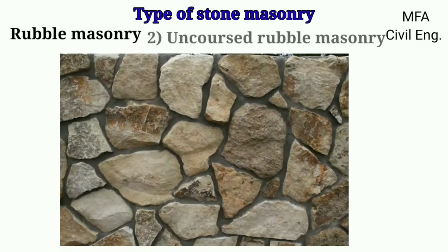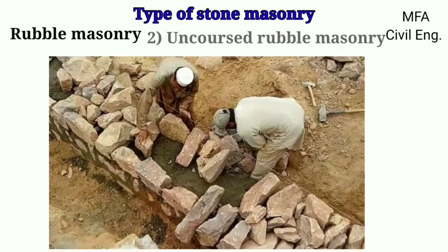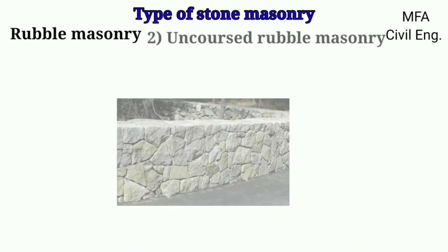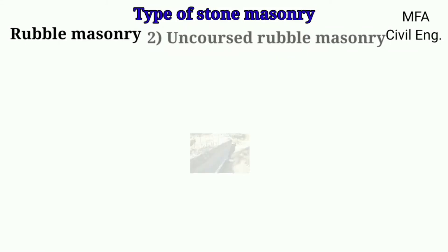This type of masonry affords a very rough appearance. If the wall is greater than half a meter in thickness, a line of header or through stones should overlap each other by at least 15 cm. This type of masonry is used for constructing compound walls, boundary walls, plinth walls, and retaining walls.